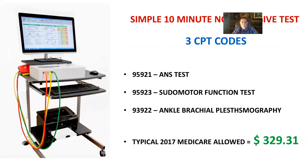There are three CPT codes you need to be billing when you're doing this test. I sell the LD Tech TM Flow system, and that allows you to have three codes: 95921 for the ANS test, 95923 for the pseudomotor function test, and 93922 for the ABI using oscillography.